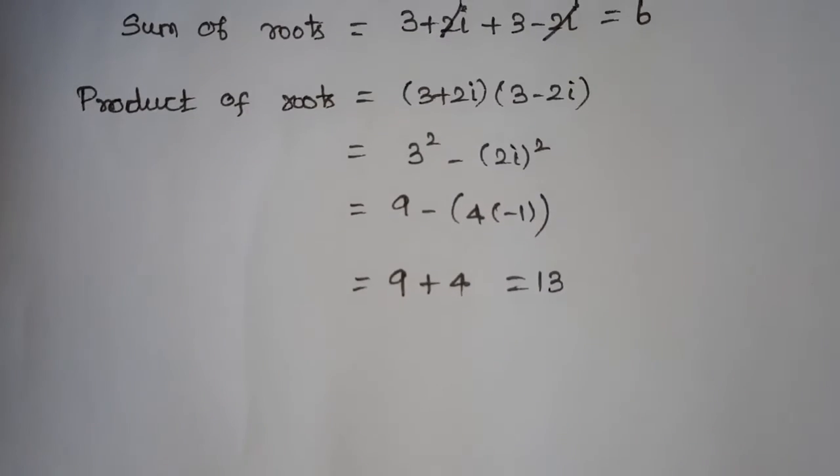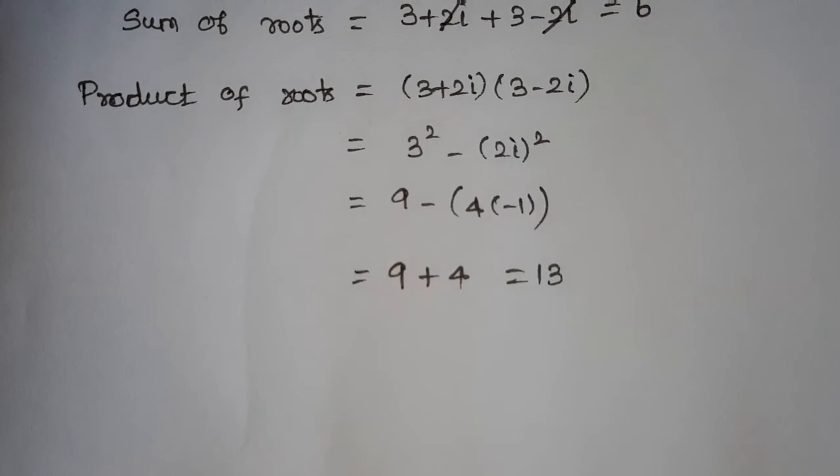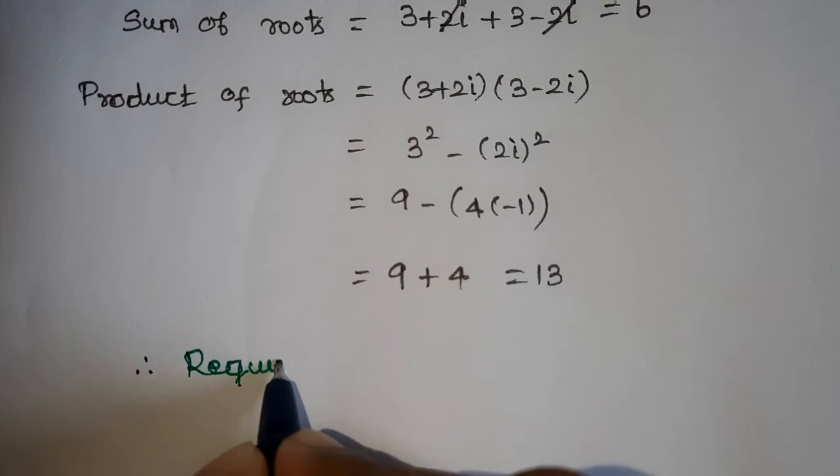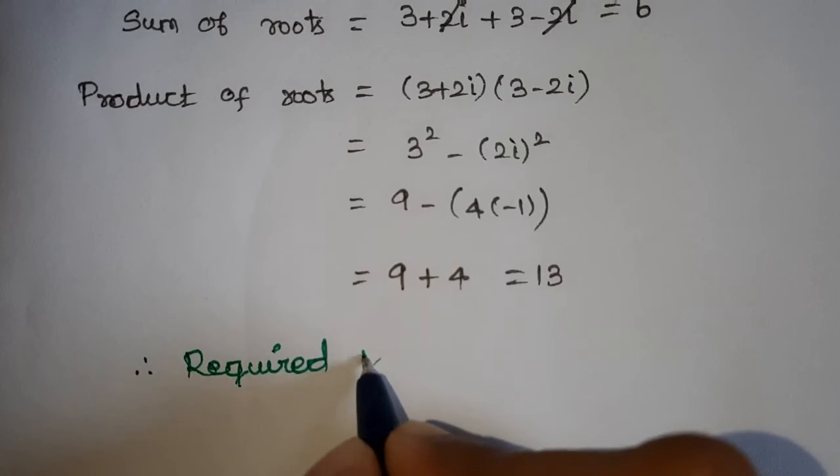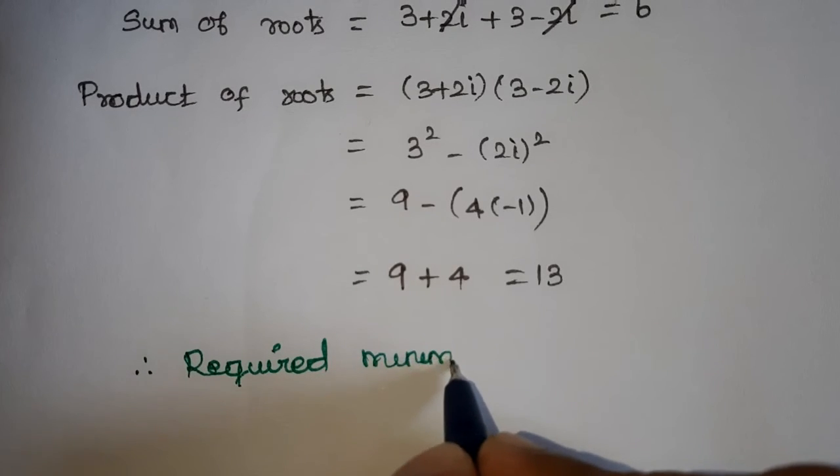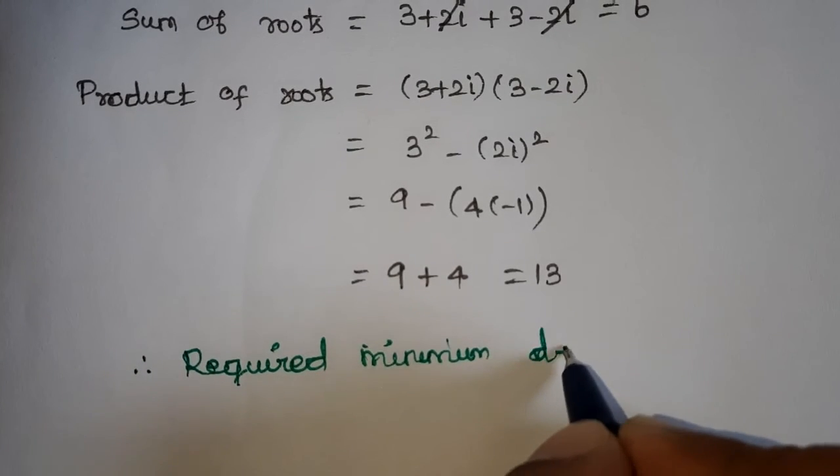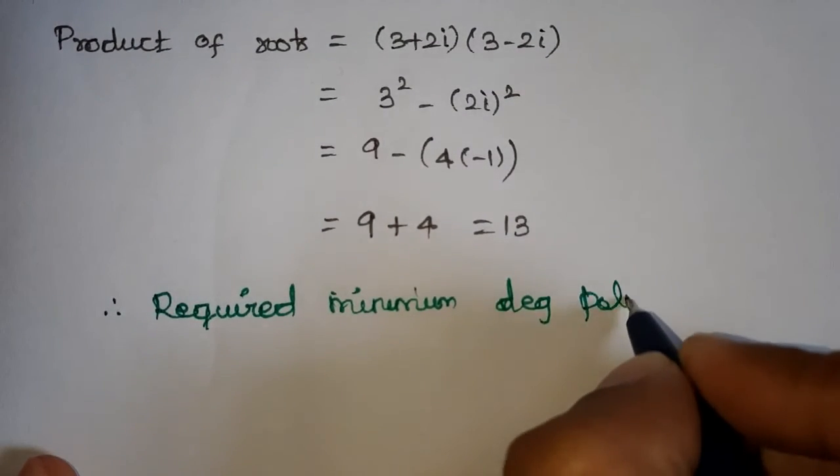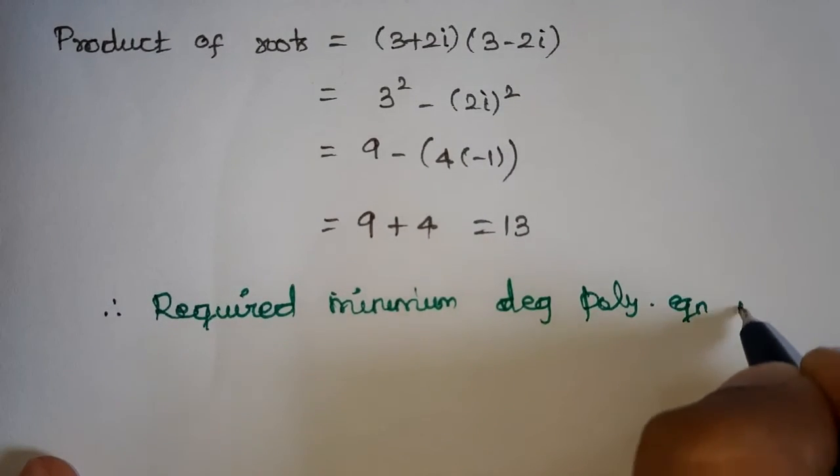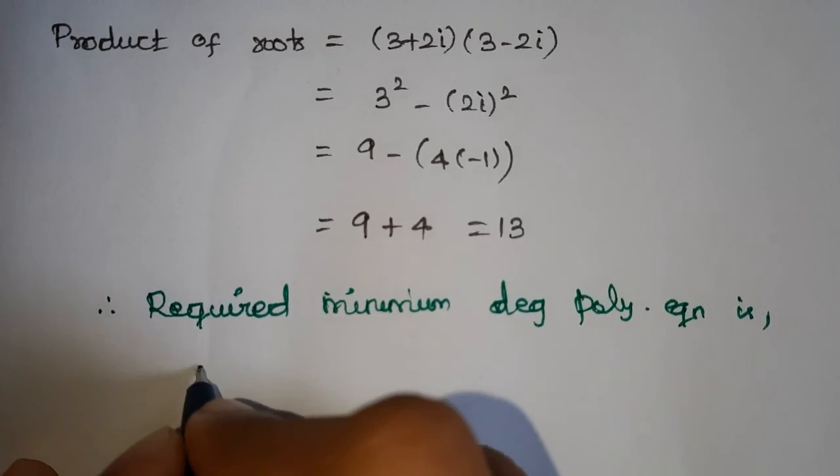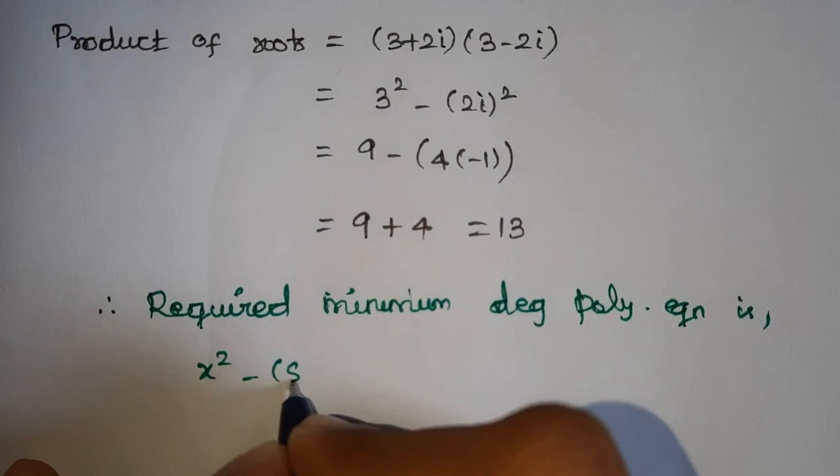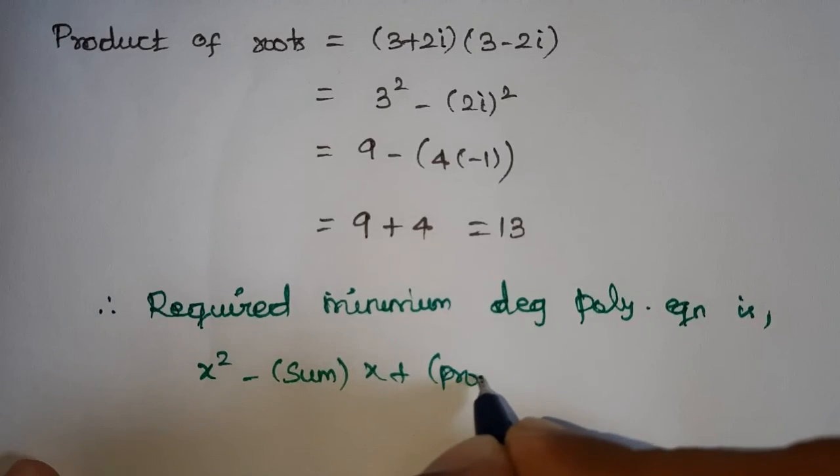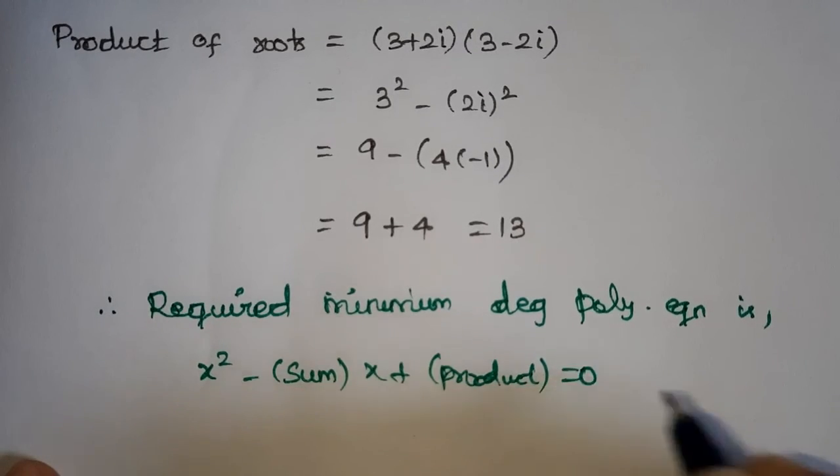Therefore, the required minimum degree polynomial equation is x square minus sum of roots into x plus product of roots equals 0.